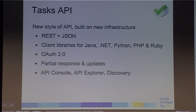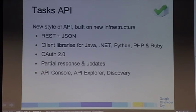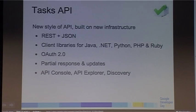What characteristics do the new-infrastructure APIs have? They are RESTful APIs using JSON format to exchange data. They have a set of client libraries — Java, .NET, Python, PHP, and Ruby — which work in a very similar way across all our APIs and languages. They all use OAuth2 as the authorization mechanism. They support partial response and update. And they all integrate with the API Console, the API Explorer, and the Discovery Service.